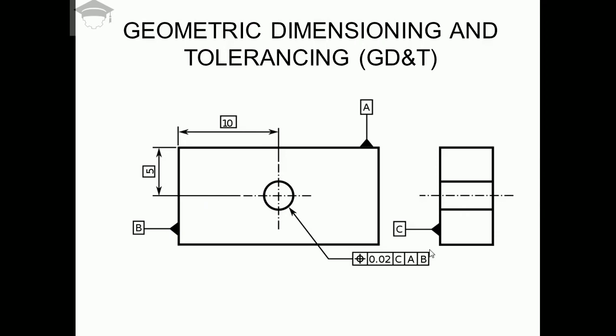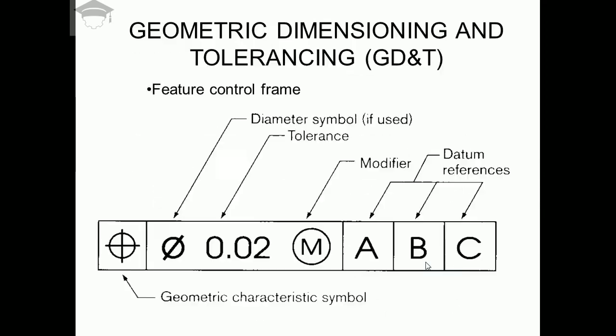The main block represents these components: first is the geometric characteristic symbol, whether flatness, parallelism, cylindricity, or concentricity. Next comes the diameter symbol, which we can use or omit. Then tolerance is a must, modifier is a must, and datum references are also a must.